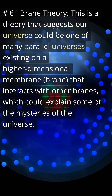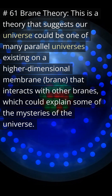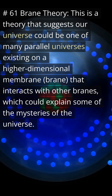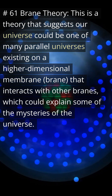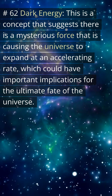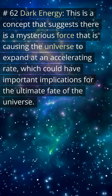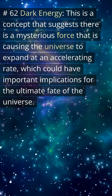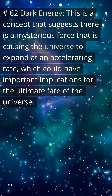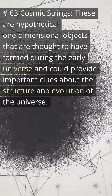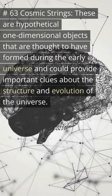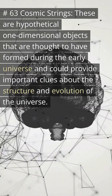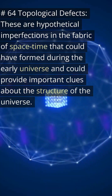Number sixty-one: brane theory — our universe could be one of many parallel universes existing on a higher dimensional membrane (brane) that interacts with other branes, which could explain some of the mysteries of the universe. Number sixty-two: dark energy — a mysterious force causing the universe to expand at an accelerating rate, with important implications for the ultimate fate of the universe. Number sixty-three: cosmic strings — hypothetical one-dimensional objects thought to have formed during the early universe, providing important clues about the structure and evolution of the universe.